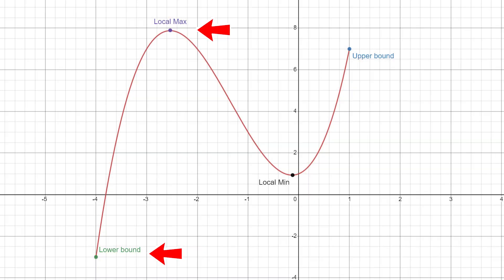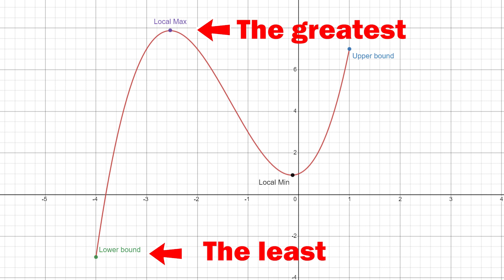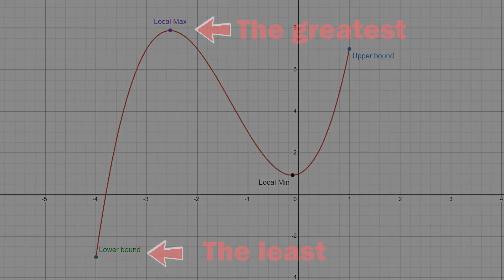When looking for absolute max min, there's no need to determine whether the stationary points are maxima or minima. Just plug in the boundary values and stationary points into f and find the greatest and the least values.